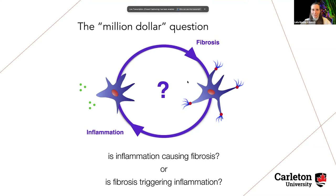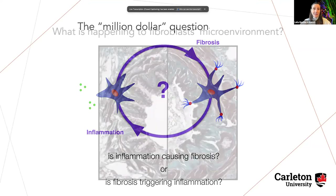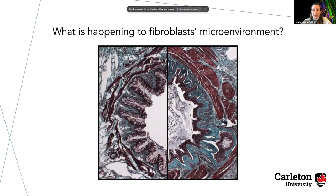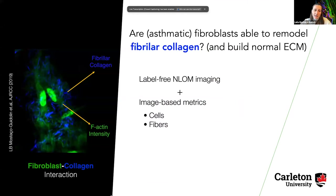That's what we call the million-dollar question, because if we solve this puzzle and find out exactly what's going on in all the steps around this diagram, that's going to allow us to find a cure for so many diseases that have this fibrotic response as one of the main hallmarks. One of the questions I have been very focused on is what's happening to the microenvironment of the fibroblasts — since we are changing the structure in there, how is that triggering the responses? I have been combining different types of imaging technologies, including nonlinear optical microscopy, with image-based metrics to find out changes in terms of the cells, the collagen fibers they are making, and so on.